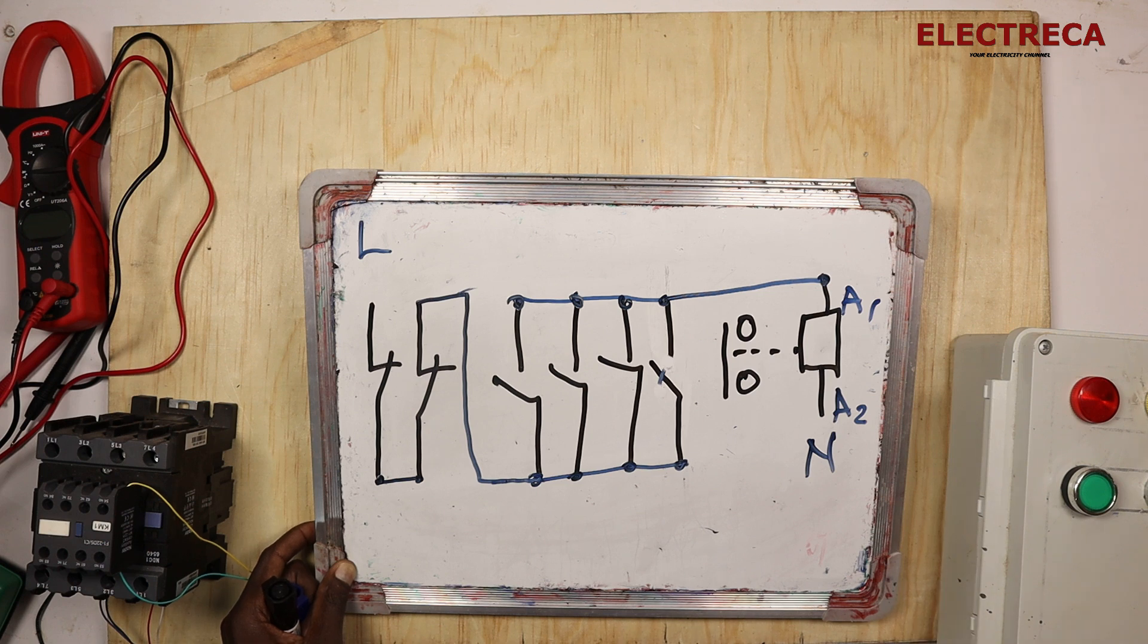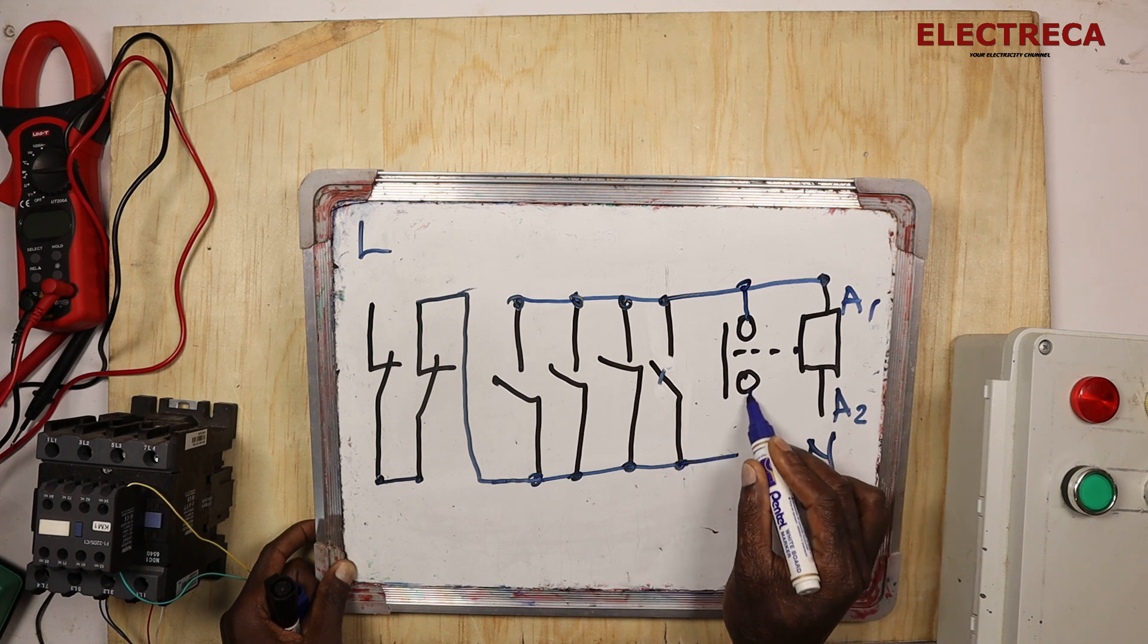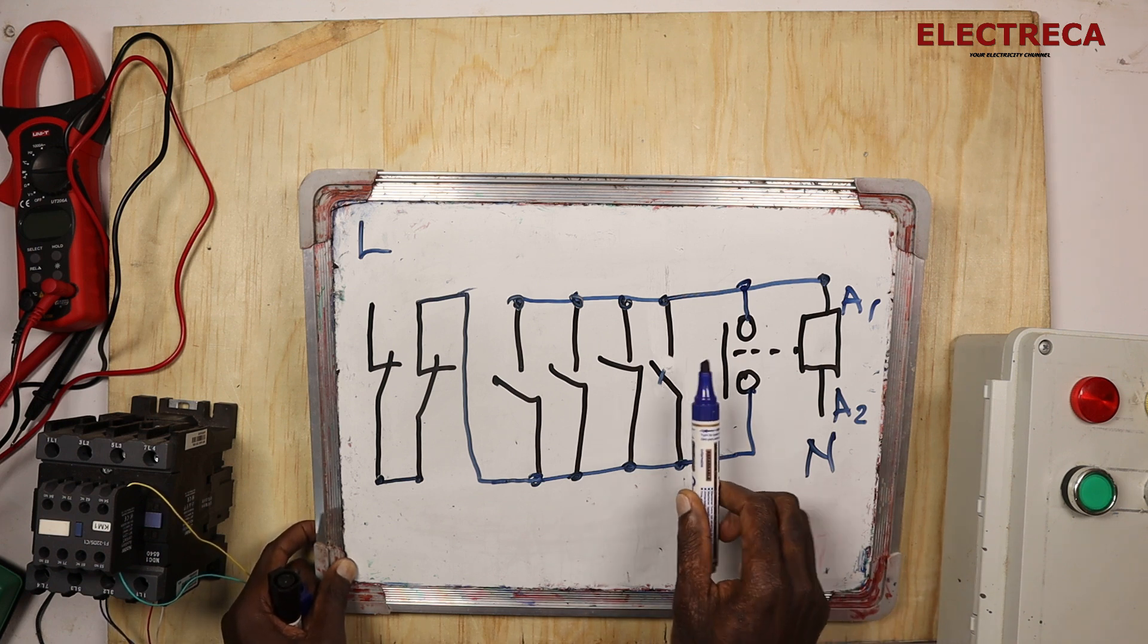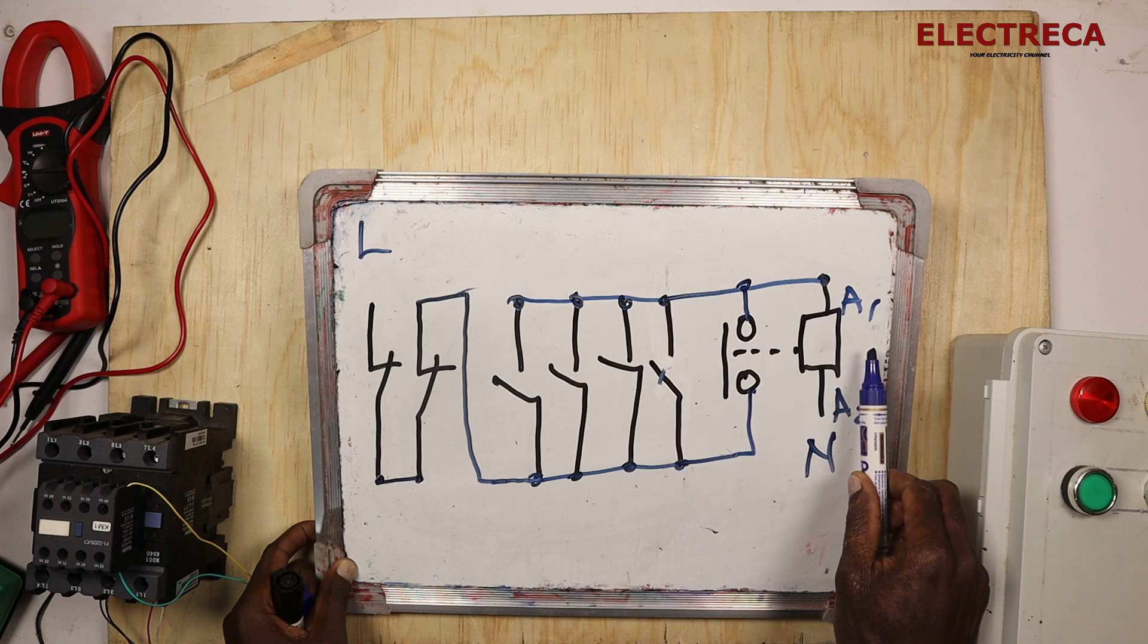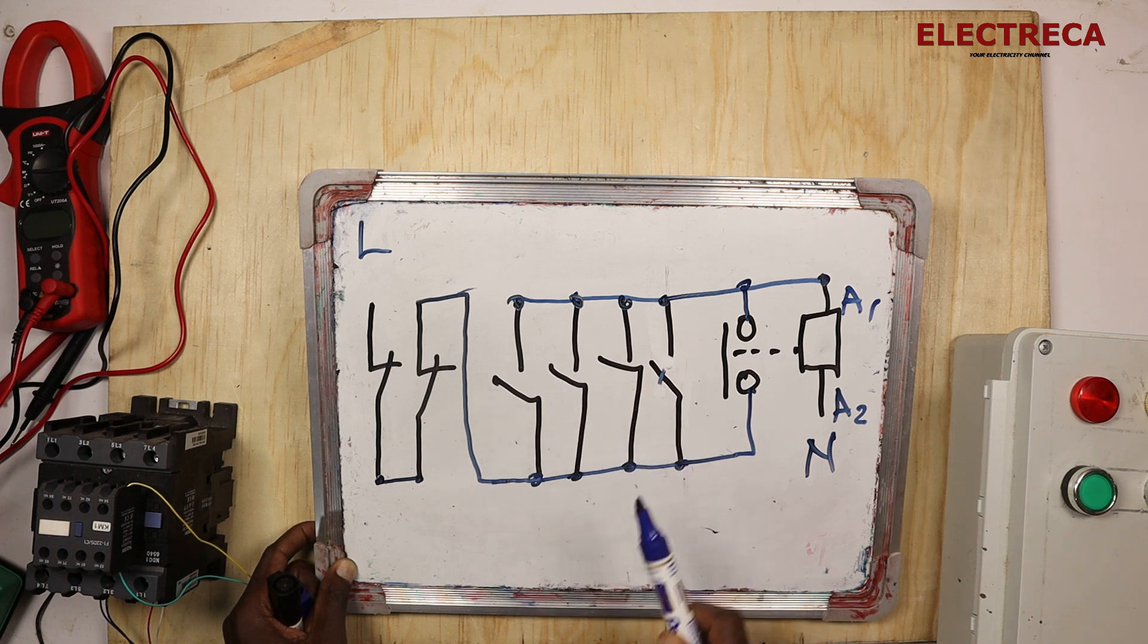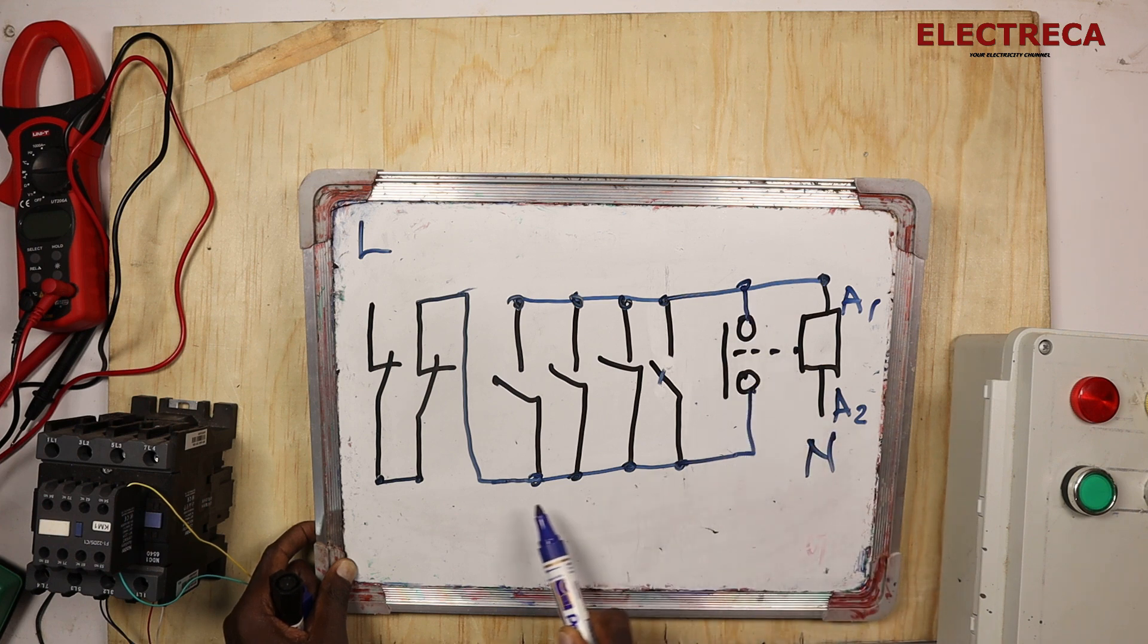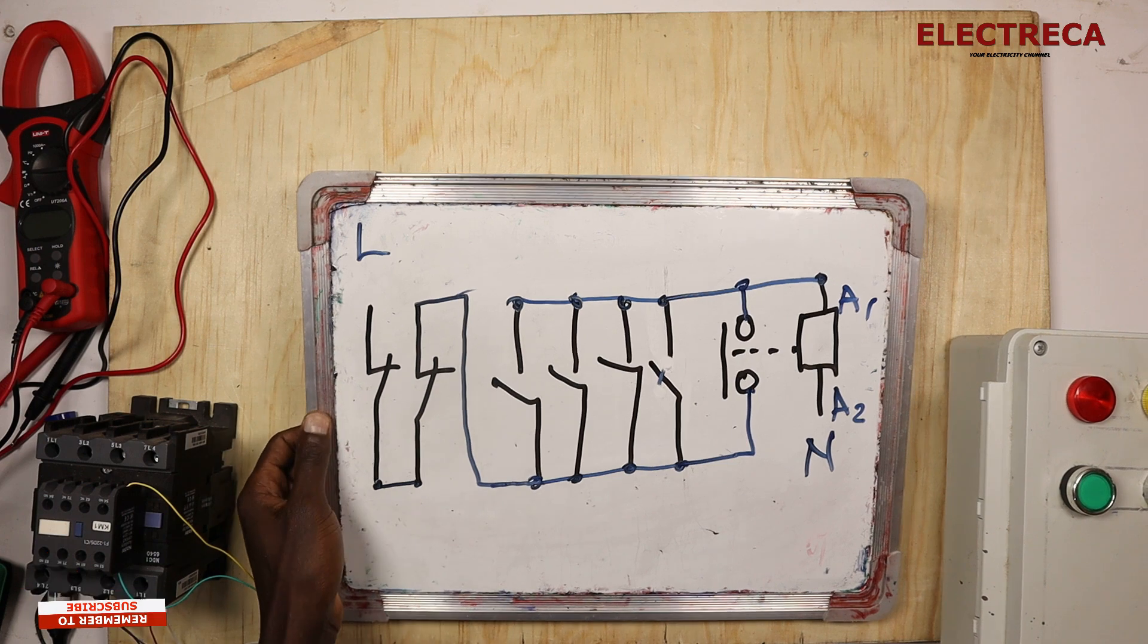It will not hold because we've not connected that one, so what we do we will connect here and then this side we connect right here. So once you close this contact here, one of the four contacts, the contactor will energize. Now after you release this button here, because this will be closed, our current now will get the second path. As simple as that.